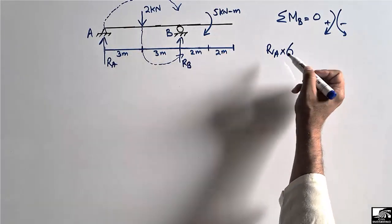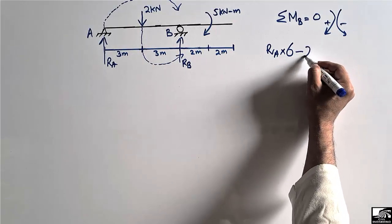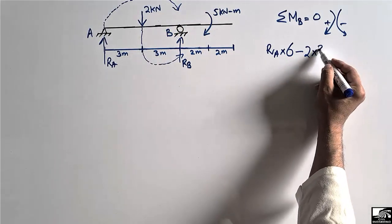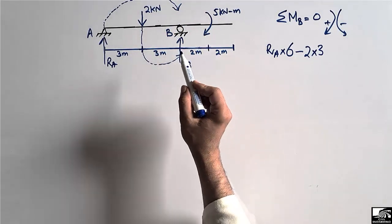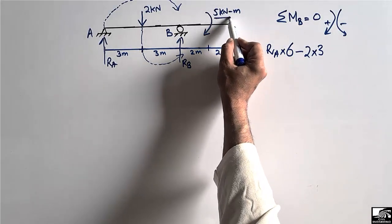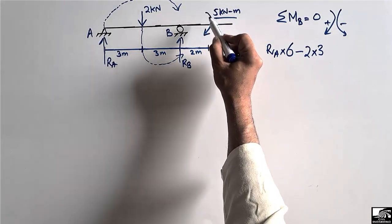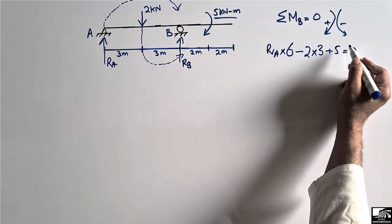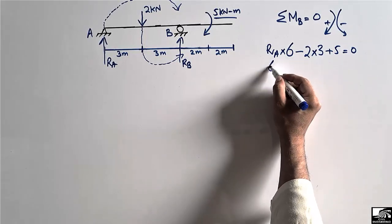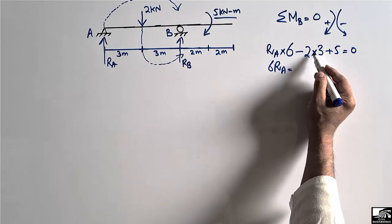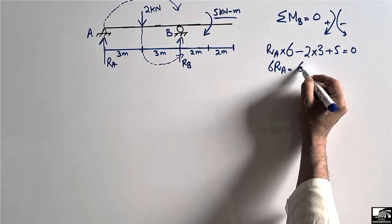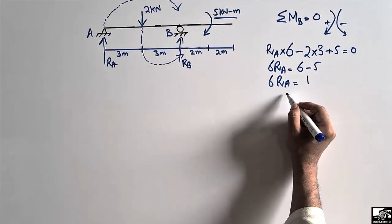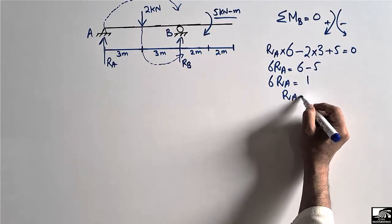The 2 kN load acts downward, so it creates a moment in the anti-clockwise direction about point B — taken as negative. So it is minus 2 multiplied by 3 meters. The applied moment of 5 kNm is in the clockwise direction so it is positive. Setting summation of moments about B equal to zero: 6RA minus 6 plus 5 equals zero, giving 6RA equals 1.